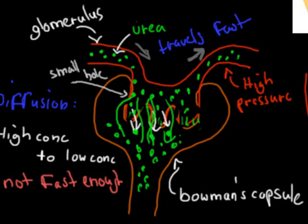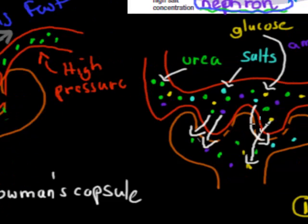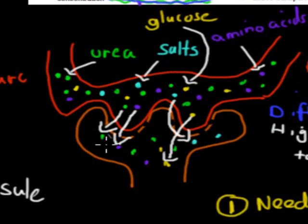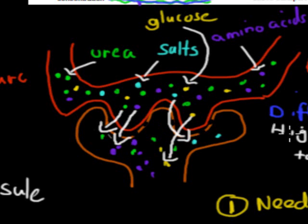Big molecules such as red blood cells will be too big to fit through the small holes, so they stay in the blood. But small molecules like urea will go in. One problem we still have with filtration is that it's also not specific — amino acids, glucose, and salt all still go into the kidney. But we want to be able to get that good stuff back; we don't want to lose amino acids and glucose in our urine.